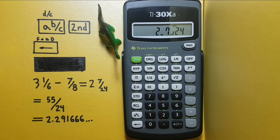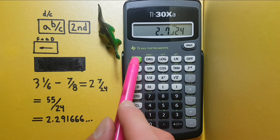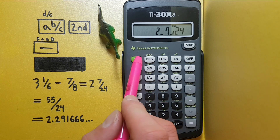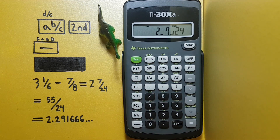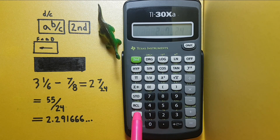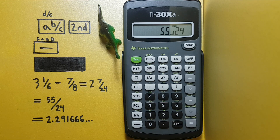Now if we wanted to convert this to a different form of fraction, we would go second function then the ABC key, and we see that this gives us 55 over 24.